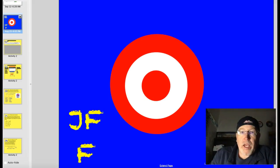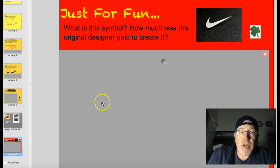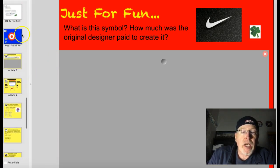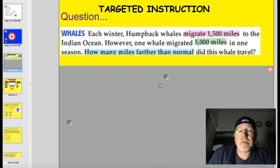Hey Valley Middle, welcome back to another math video. Tonight we're going to be writing one-variable equations. Before we do that, let's start off with our trivia question. Just for fun, what is this symbol and how much was the original designer paid to create it? I'll give you the answer to that after instruction tonight. Officially, our target is I can write one-variable equations for a given situation. Let's do this time.